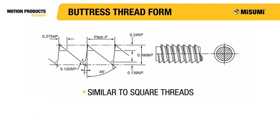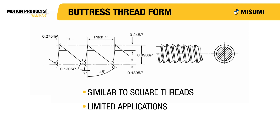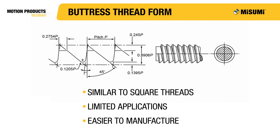Buttress threads are effectively square threads with half of the thread cut off, changing the rectangle to a triangle. This form can only be used in applications where the force is applied in only one direction. This thread is used because they are easier to manufacture than square threads, but they have the same efficiency.